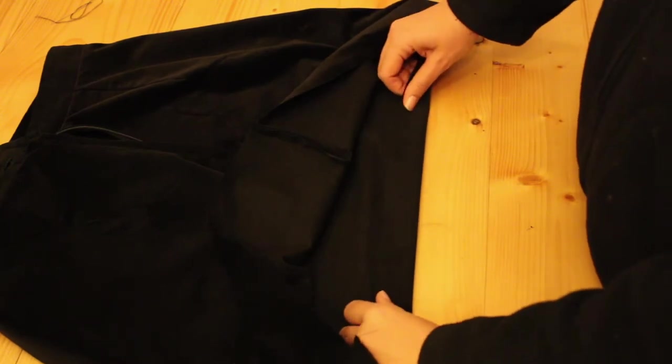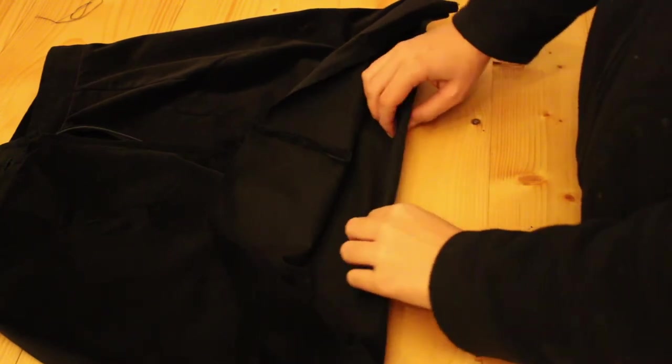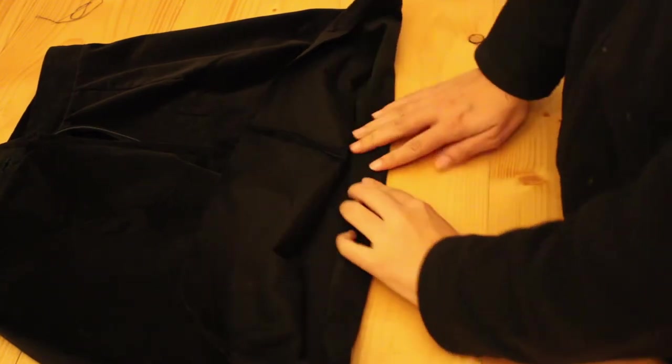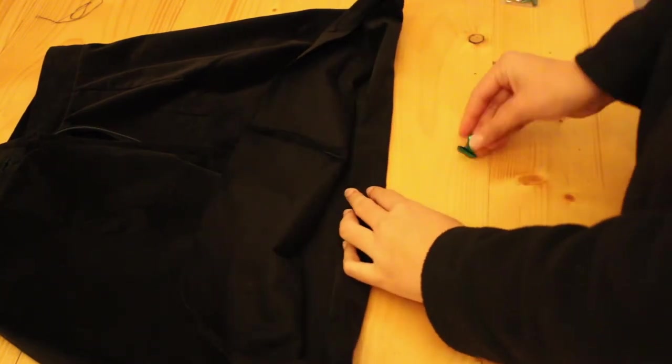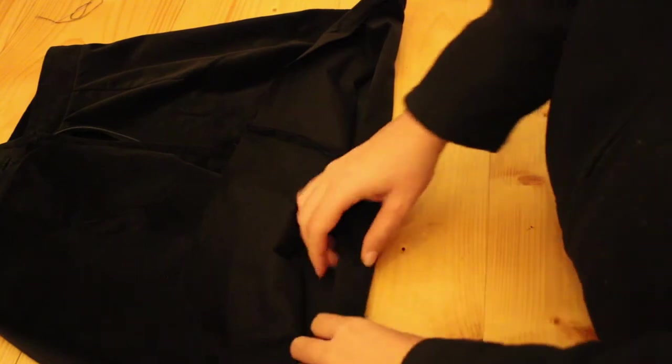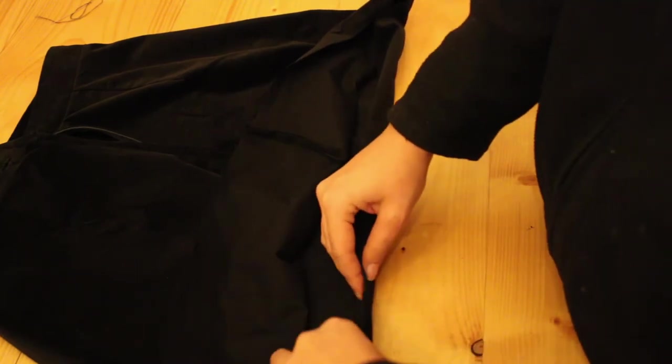And all that's left to do now is to sew a double fold hem into the bottom. So I fitted the skirt first and I decided how short I wanted the skirt to be.